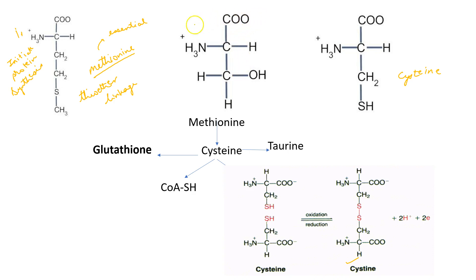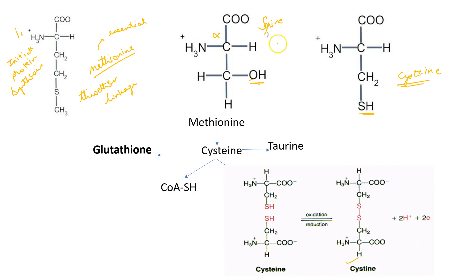Looking at this structure, we can see a central alpha carbon connected to a carboxyl and amino group, hydrogen, and the R group is CH2OH. If you look at the R group of cysteine and the carbon skeleton, it is all the same except that instead of the SH of cysteine, it has an OH or hydroxyl group. This is the structure of serine, and the structure is so similar because the entire carbon skeleton of cysteine is derived from serine. So serine is very important for the biosynthesis of cysteine.